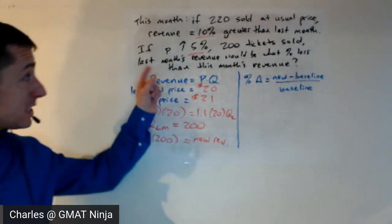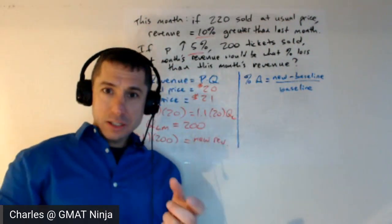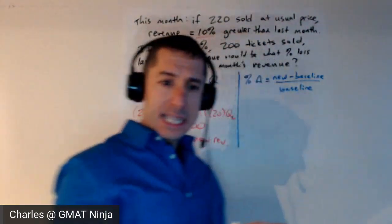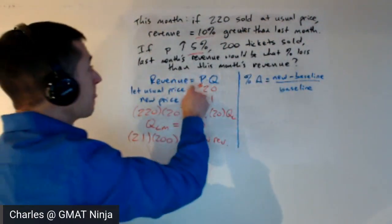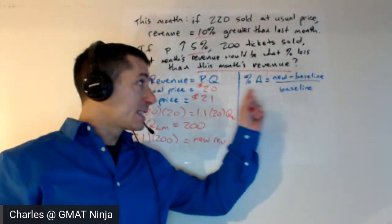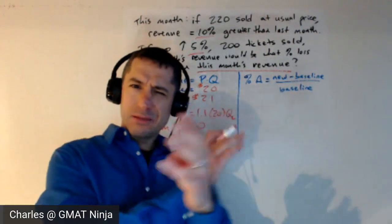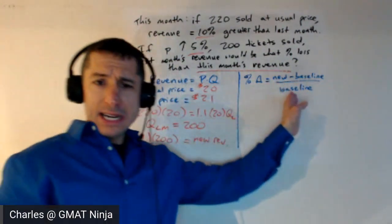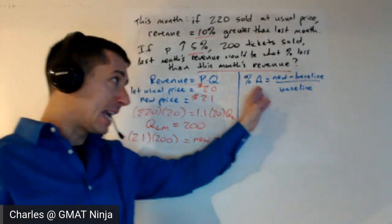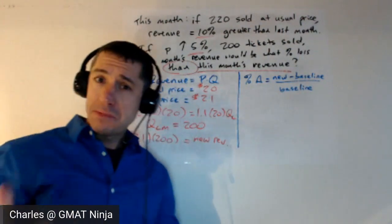Now all we need to know is what was the percent change from last month to this month under this scenario. The question specifically asks: last month's revenue would be what percent less than this month's revenue. A little trick here — notice I rearranged the question so it has a 'then' in it. The percent change formula is often presented as new minus old over old, but I prefer to write it as new minus baseline over baseline. Your baseline is whatever follows the word 'then' — now it's pretty much foolproof.